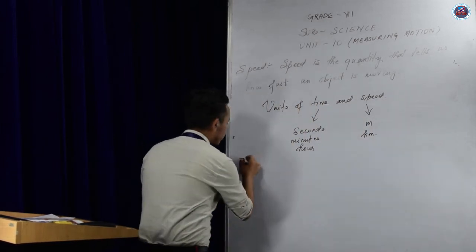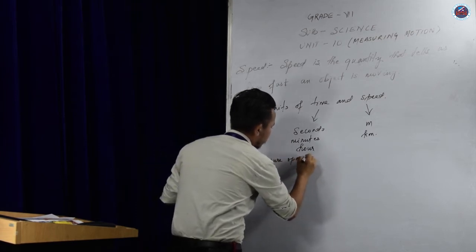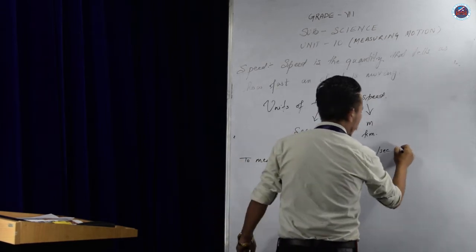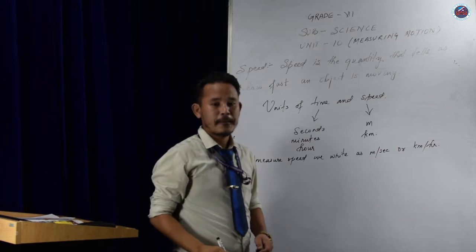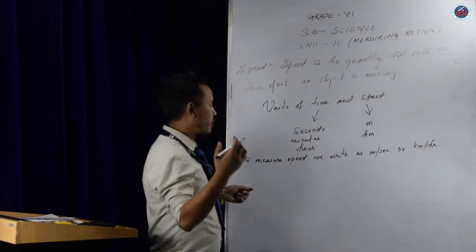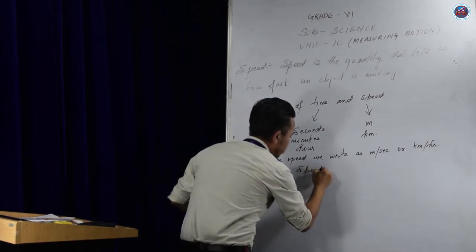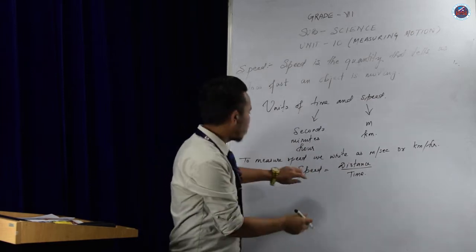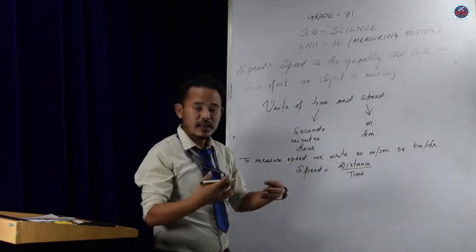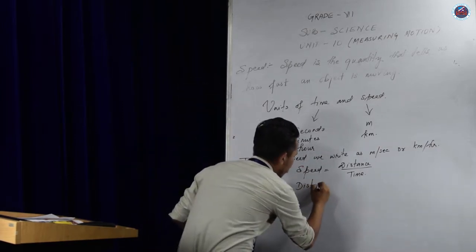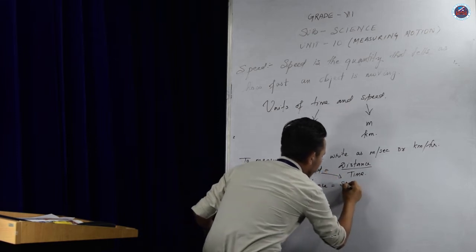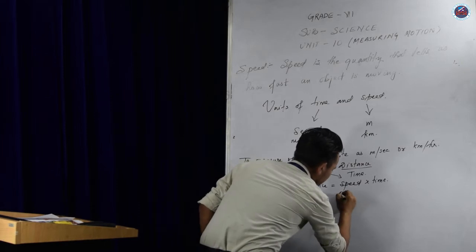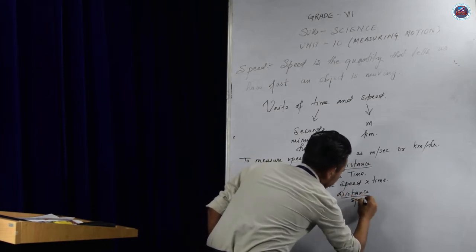To measure speed, we write as meter per second or kilometer per hour. How do we calculate speed? We have a very simple formula here. Speed can be calculated by distance divided by time. Now, using this formula, we can also find out the distance as well as time. For distance, cross multiply, we get speed into time. For time, we get distance divided by speed.